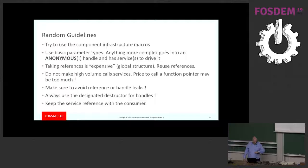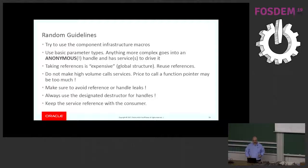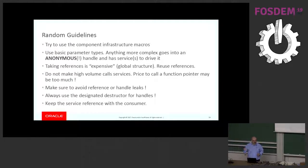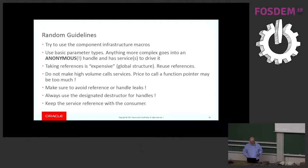Here are some random guidelines — please make sure you read those. Try to use the component infrastructure macros; I know they are ugly, but I have plans for them. Please help me not accrue more technical debt. Also, taking references to services is expensive — it involves taking a global lock currently and increasing some counters. So try to keep references for as long as you can, for as long as it makes sense.